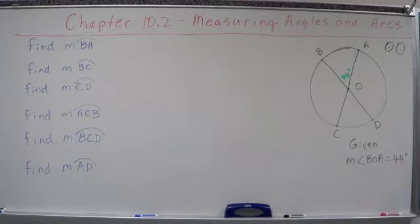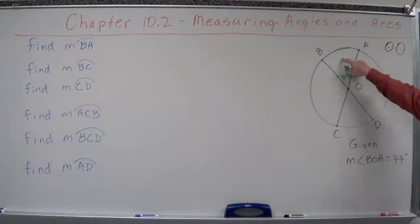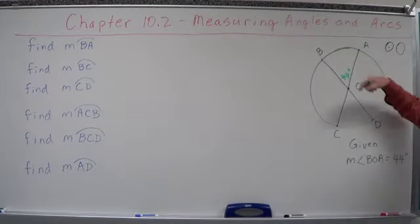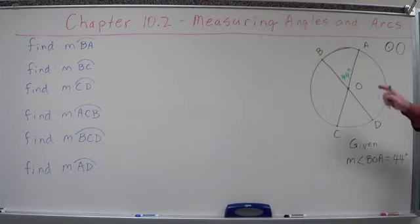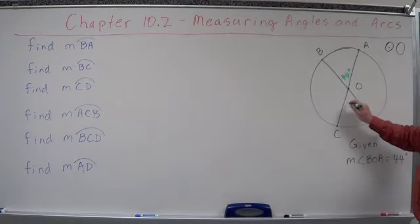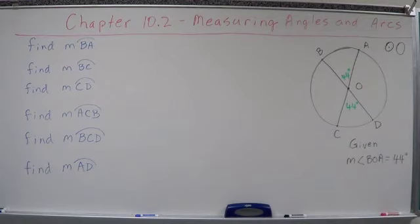And we're told here that given that the measure of angle BOA is 44 degrees. So we know that this right here is 44 degrees. Well, if we know that is 44 degrees, what else do we know? What do we know about these two angles? What type of angles are they? Opposite angles, not adjacent angles of intersecting lines, intersecting segments. They haven't changed properties simply because they're inside of a circle. They're still vertical angles. So this has got to be 44 degrees.